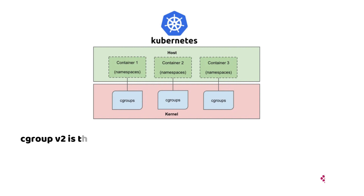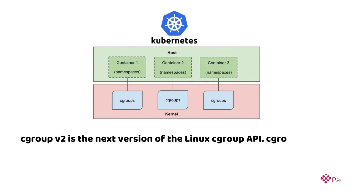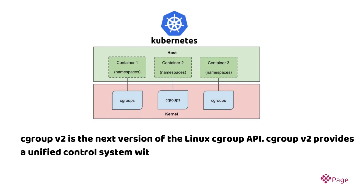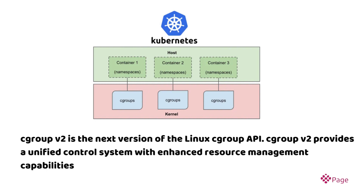CGroup V2 is the next version of the Linux CGroup API. CGroup V2 provides a unified control system with enhanced resource management capabilities.